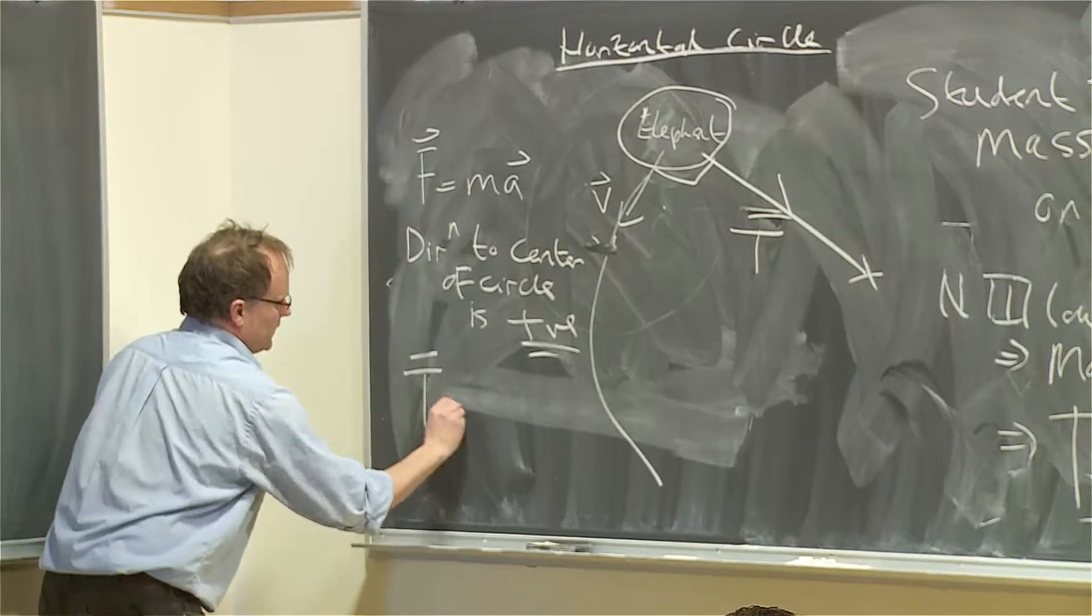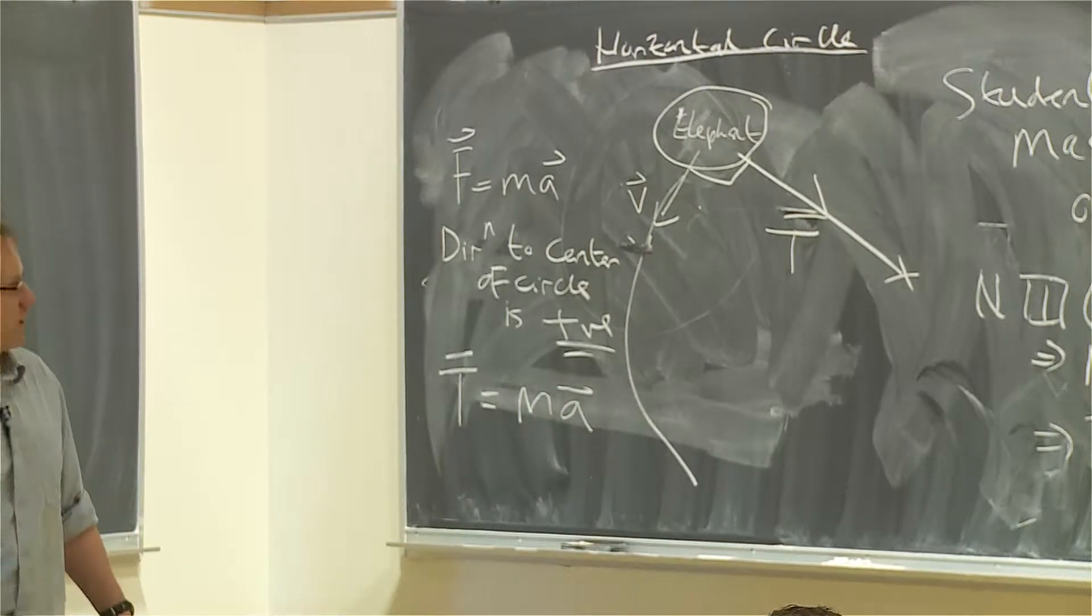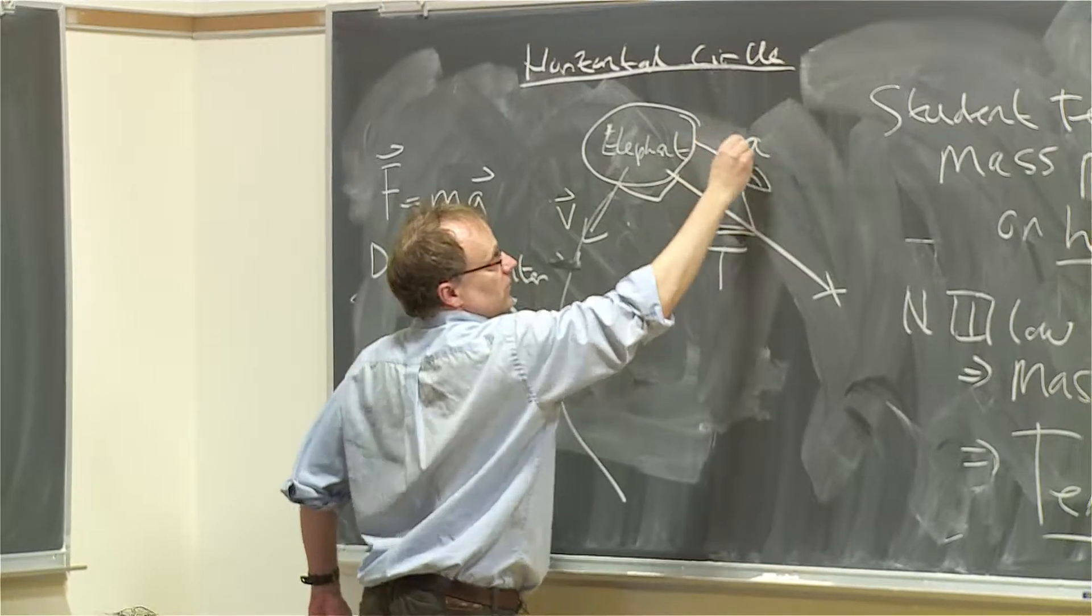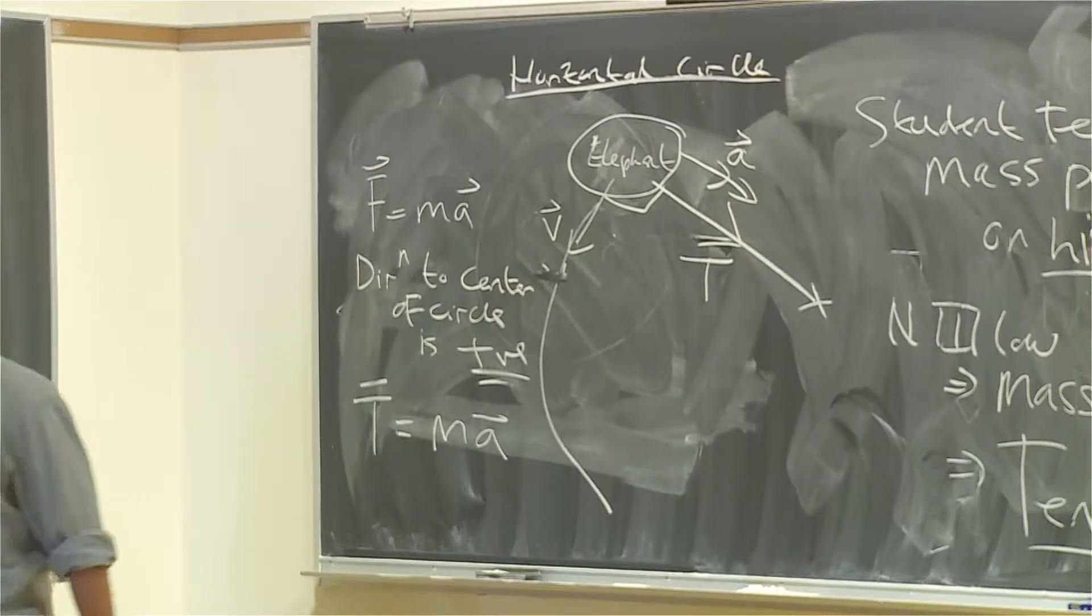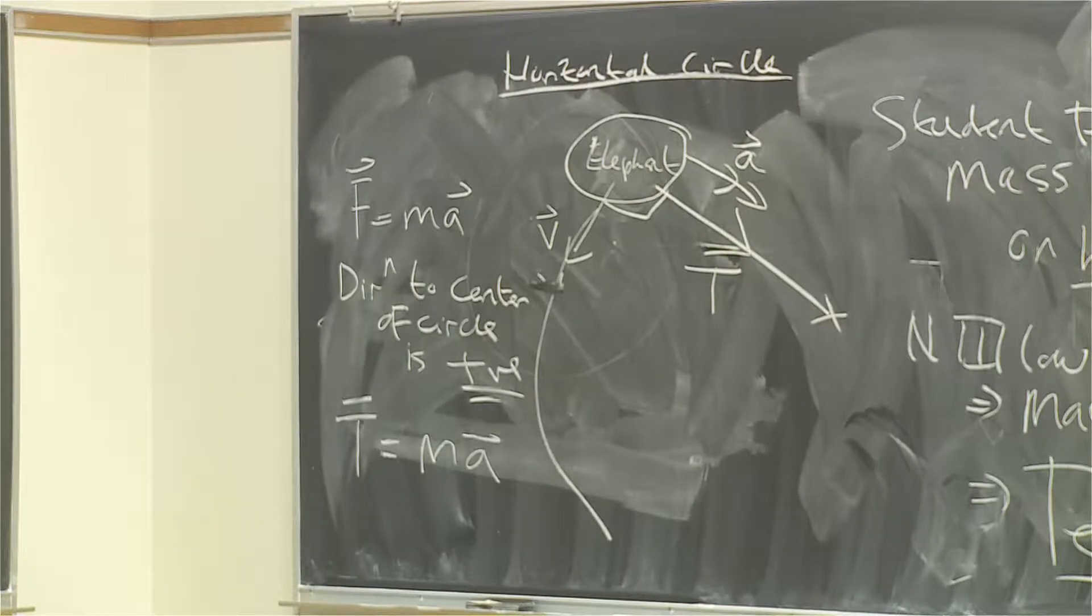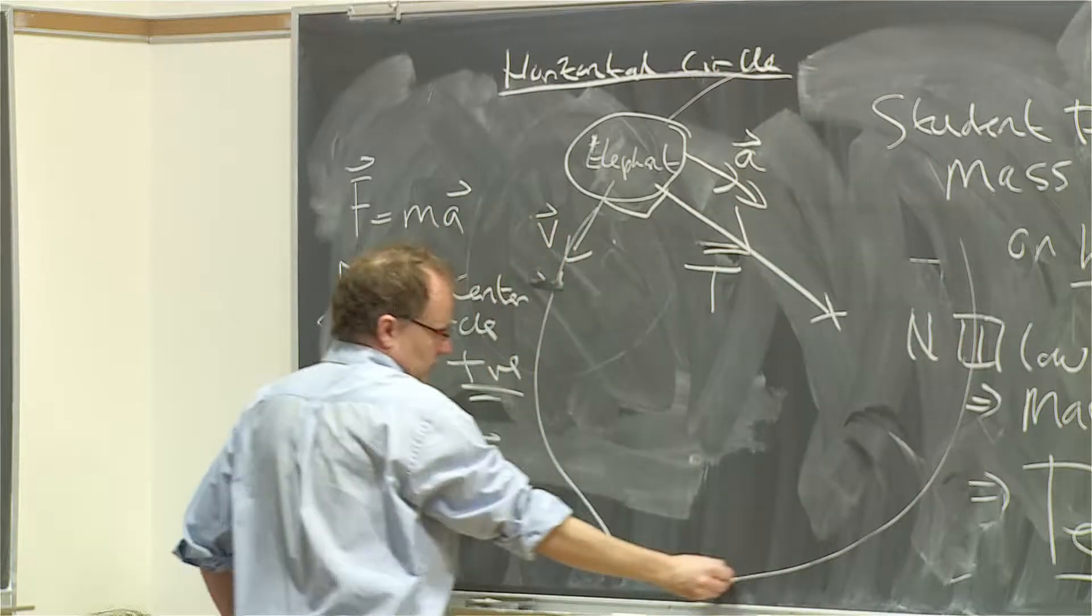So if we write F equals MA, we're going to end up with T equals MA, and therefore the acceleration of the elephant is in this direction. You can call that A. So the acceleration is towards the center of the circle. I mean, I can draw a big circle, it might be easier, I don't know, run out of space a bit.